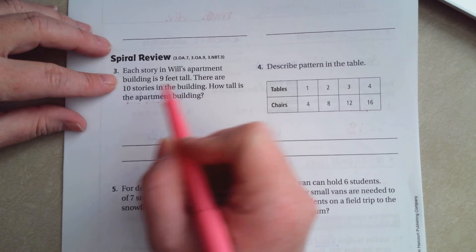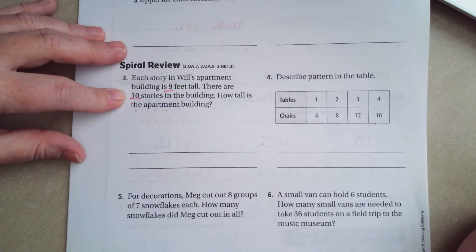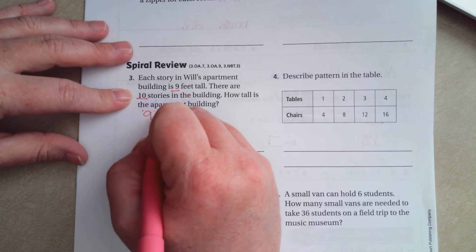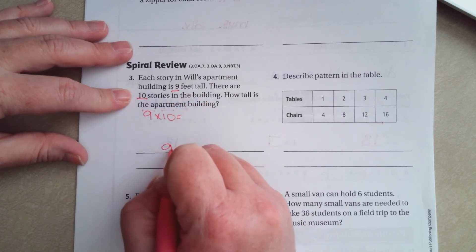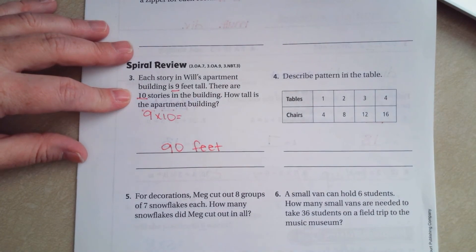Each story in Will's apartment building is 9 feet tall. There are 10 stories in the building. How tall is the apartment building? Well 9 times 10. That's 90 feet. Make sure we're labeling.